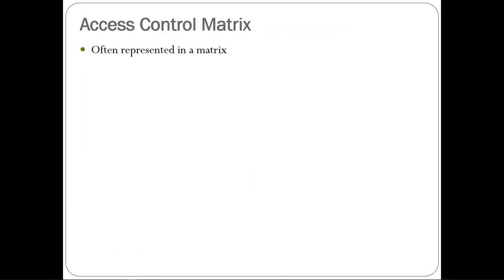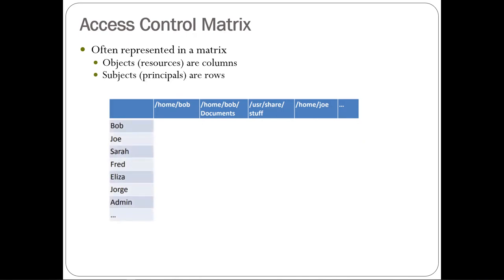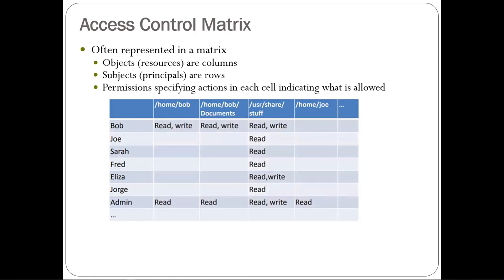How are permissions and policies stored? What is stored is typically known as an access control matrix. Logically, you represent this in a table where across the columns are the objects you're trying to protect — maybe files in the file system — and along the rows are the subjects. The permissions are specified as fields inside that table.